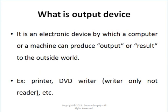What is an output device? It is an electronic device by which a computer or a machine can produce output or a desired result to the outside world or to the user. Printer and DVD writer are examples of output devices.